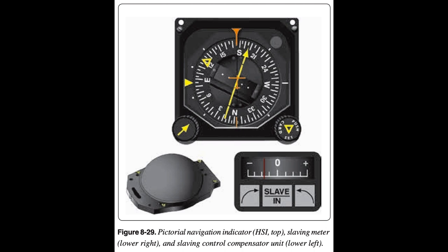A concentration of lines of magnetic force, after being amplified, becomes a signal relayed to the heading indicator unit, which is also remotely mounted. This signal operates a torque motor in the heading indicator unit that processes the gyro unit until it is aligned with the transmitter signal. The magnetic slaving transmitter is connected electrically to the HSI. There are a number of designs of the remote indicating compass; therefore, only the basic features of the system are covered here. Instrument pilots must become familiar with the characteristics of the equipment in their aircraft.